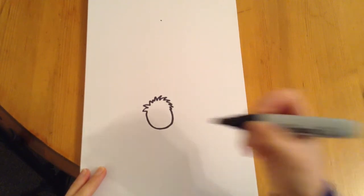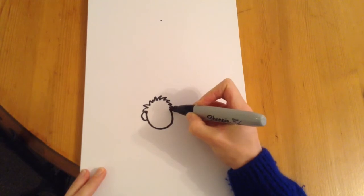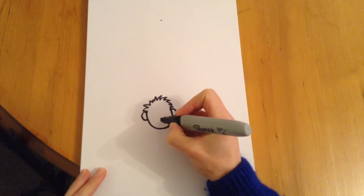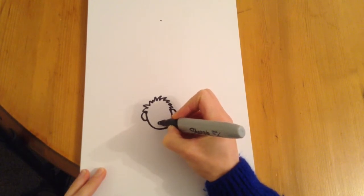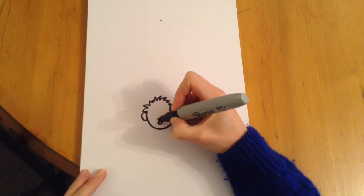So next thing to do are the monkey ears. So we do these big protruding ears on either side. Next stage we'll do a little monkey nose, a little one like that.